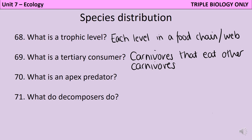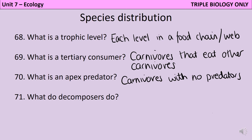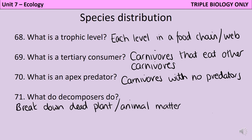Apex predators like sharks or tigers are carnivores that don't have any predators themselves. Decomposers break down plant and animal matter by secreting enzymes into their environment, so that digestion is happening outside of their body — what we call extracellular digestion. They're then able to absorb those small soluble food molecules which diffuse into them.